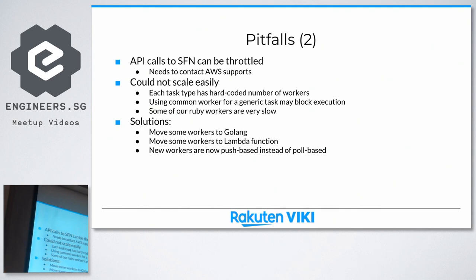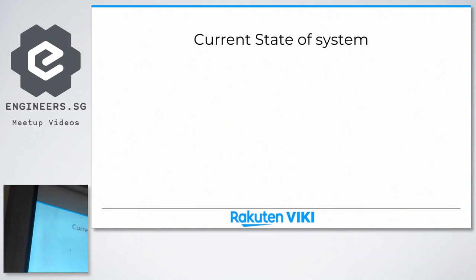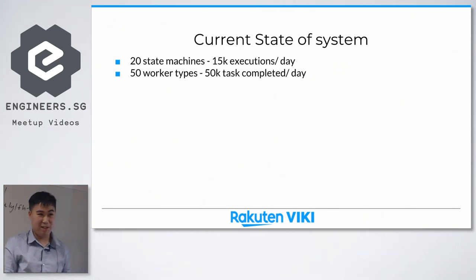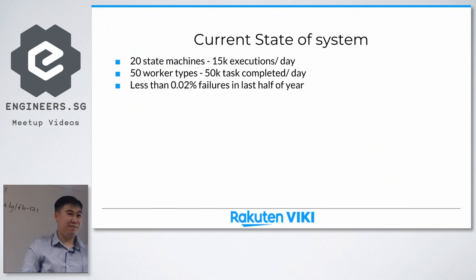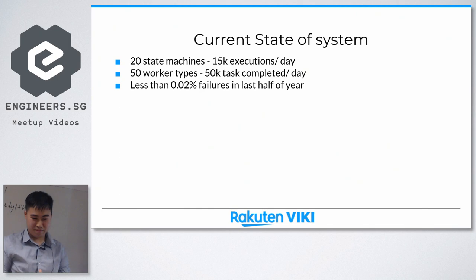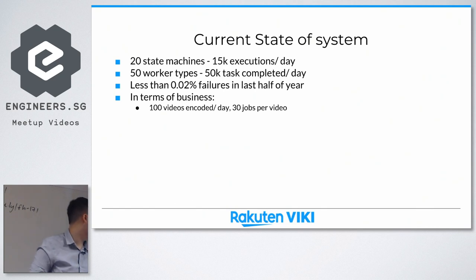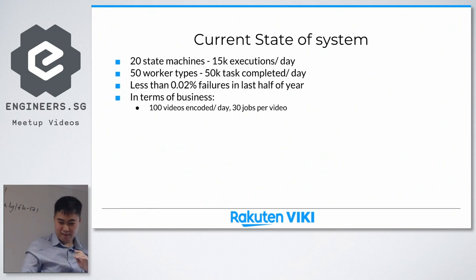What's the current state of the system? Right now we have around 20 state machines with 50,000 to 150,000 executions per day. We have around 50 worker types with 50,000 tasks completed. We have fewer than two failures in the last half of the year — this is the most important point because it makes our lives as engineers much better. In terms of business, we can now support around 100 videos encoded per day with 30 jobs per video, which is around 3,000 jobs — and the one flow I showed you corresponds to one video, but the actual flow is much more complex.